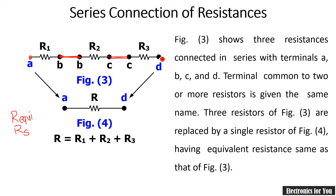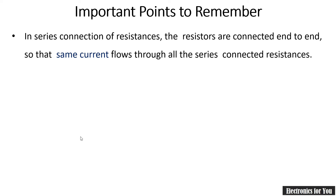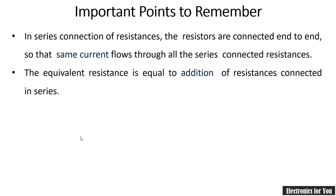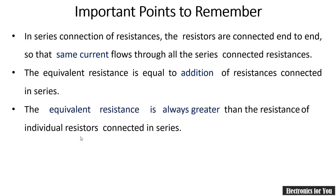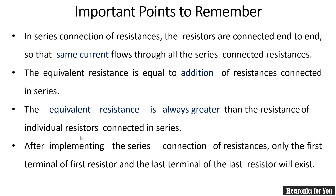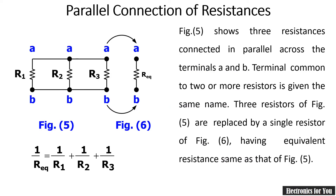Note that the first point and the last point - for example, A and D - will always exist. Some important points to remember for series connection: the current flowing through all resistances is the same; the equivalent resistance is the addition of all resistances connected in series; and the equivalent resistance of a series connection is always greater than any individual resistance in the series.